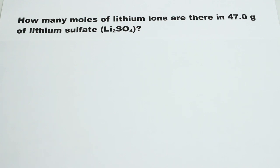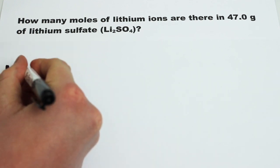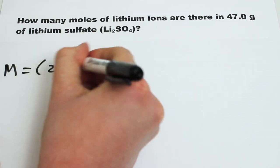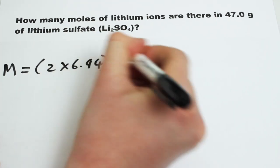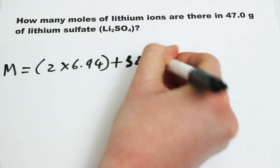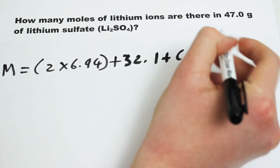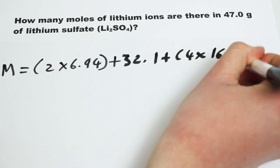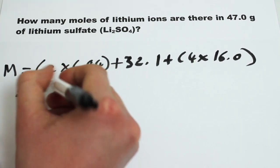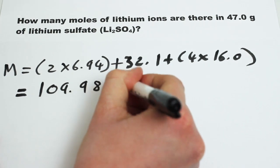To work out the molar mass of lithium sulphate, we must do the following. We write M, because that is the symbol for molar mass, equals 2 times the relative atomic mass of lithium, which is 6.94, plus the relative atomic mass of one sulphur, which is 32.1, and then we add 4 times the relative atomic mass of oxygen, which is 16.0, which accounts for the four oxygens in lithium sulphate. We then get a molar mass of lithium sulphate of 109.98 grams per mole.